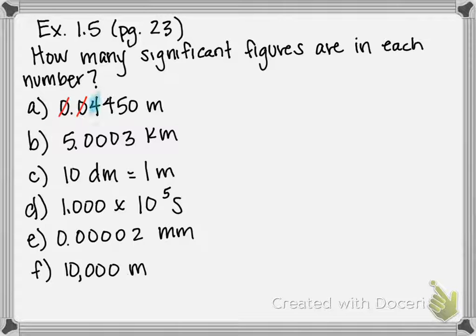Our significant numbers start at 4 because it's not a zero. So we have 1, 2, 3, and then we need to figure out if that trailing zero is significant. Yes, it is, because it's after a decimal place. So this zero is also significant. We have 1, 2, 3, 4 sig figs in this number.